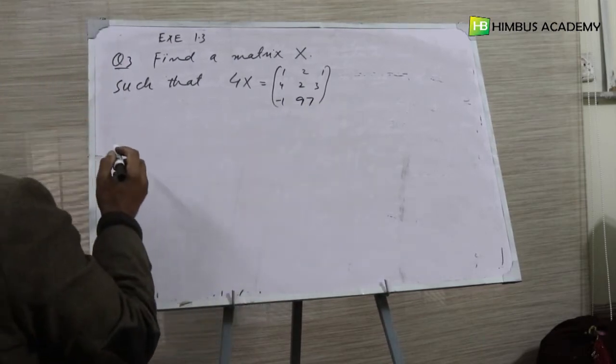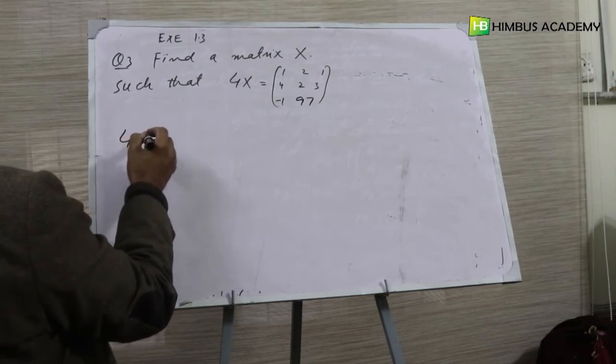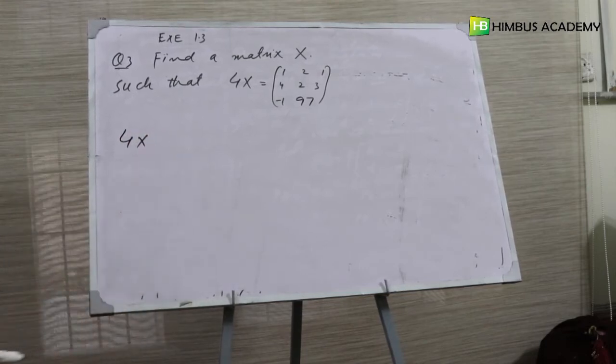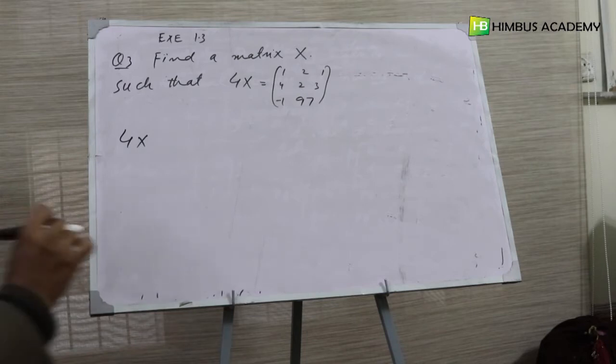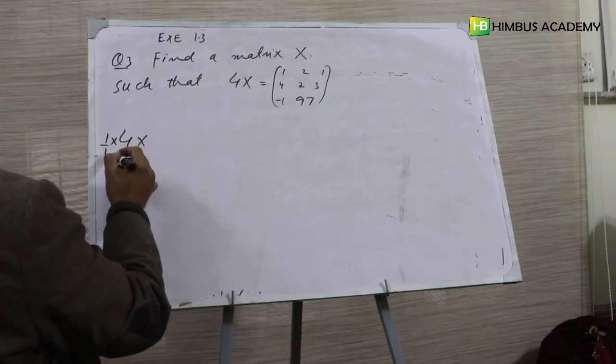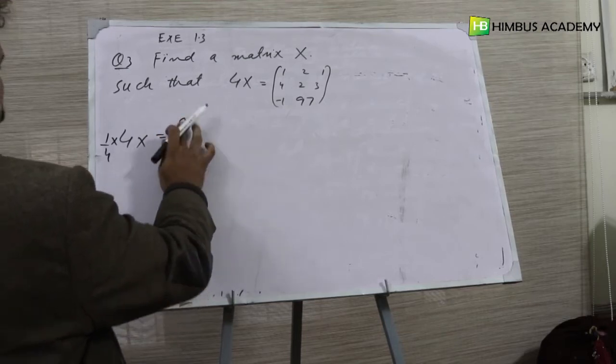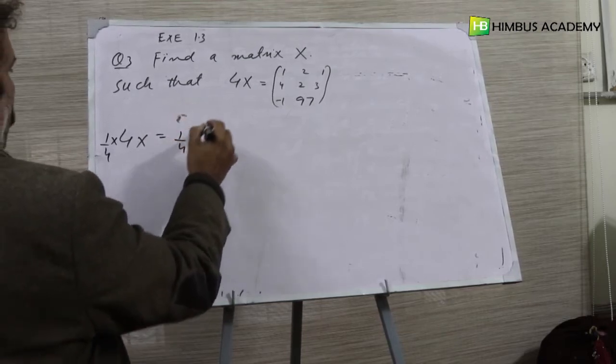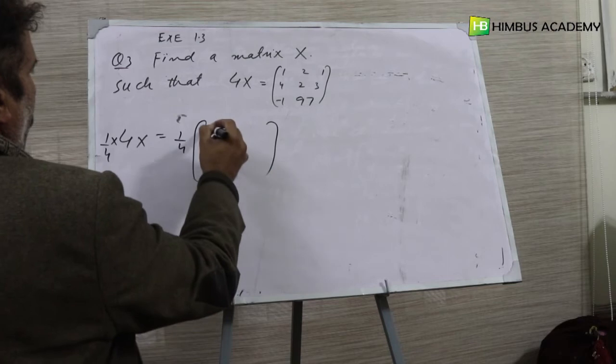Okay, from 4X we just need to find X. So how will we do this? We will multiply this by 1 over 4. 4X multiply 1 over 4. So we multiply the entire matrix by 1 over 4.